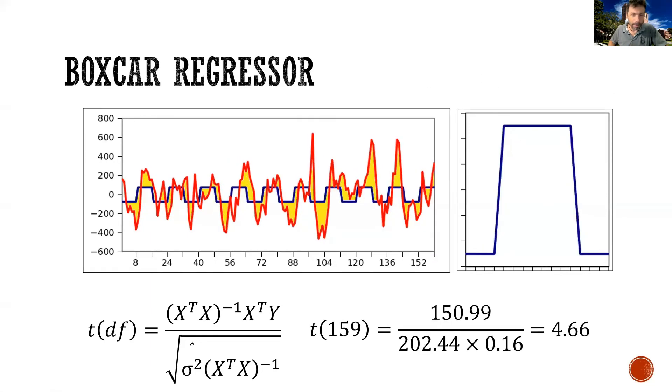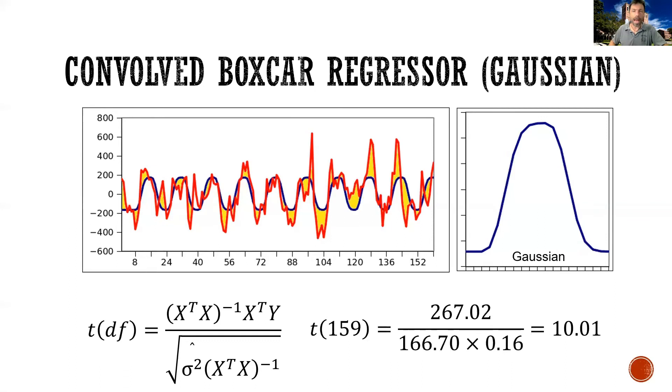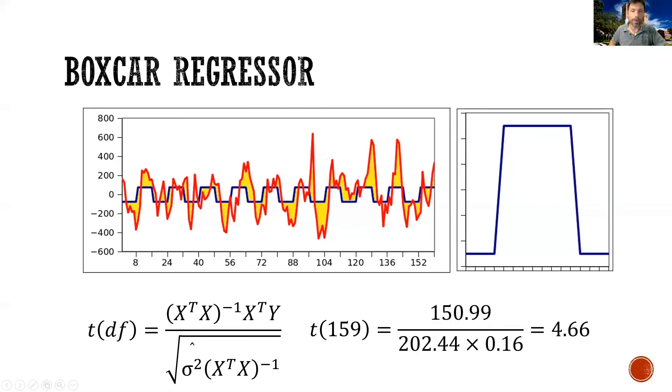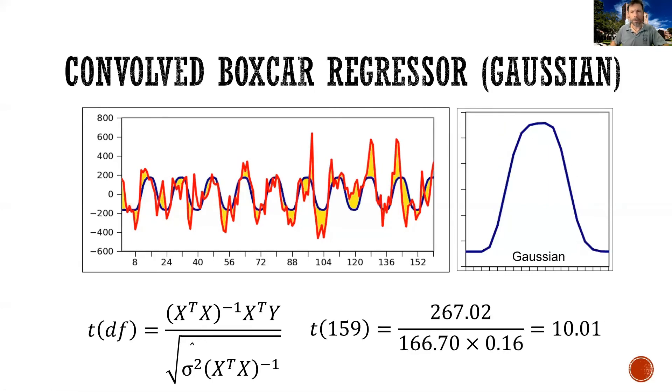And indeed, if you look at the t-test, we have now greatly increased the magnitude of the effect, which went from 150 to 267. And we have also decreased the amount of variance. So overall, our t-test has more than doubled.